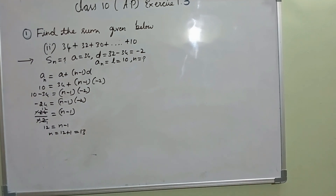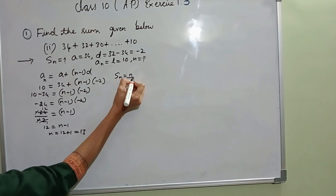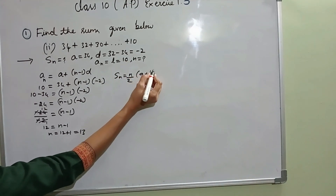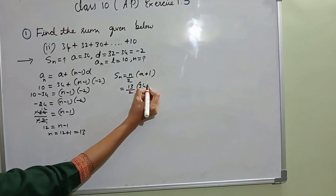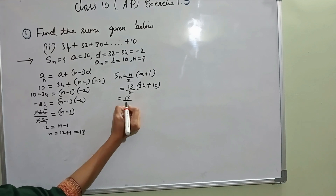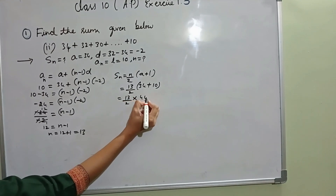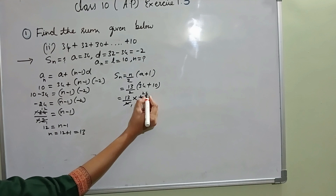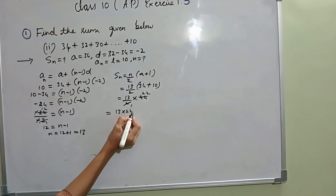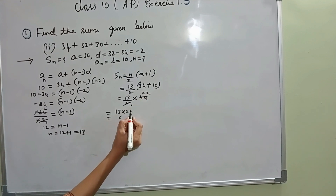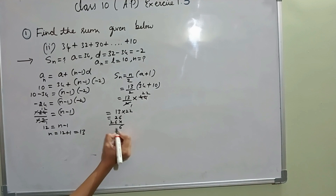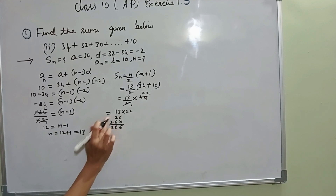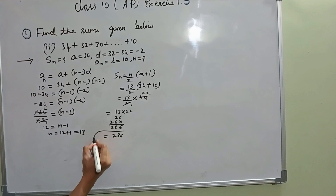Now I know the N value. I can find SN using the formula N by 2 into A plus L. N is 13: 13 by 2 into 34 plus 10 is 44. Simplifying: 13 by 2 into 44 gives 13 into 22. 13 into 22: 3 twos are 6, 1 two is 2, 3 twos are 6, 1 two is 2, giving 286. So SN value is 286.